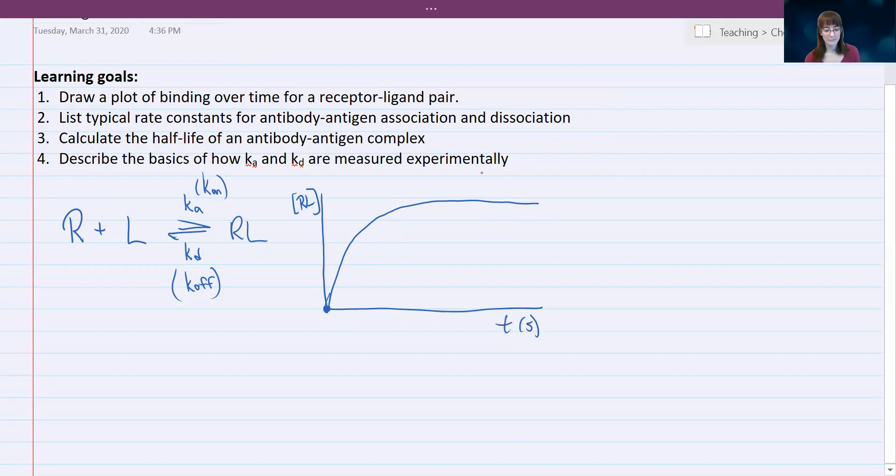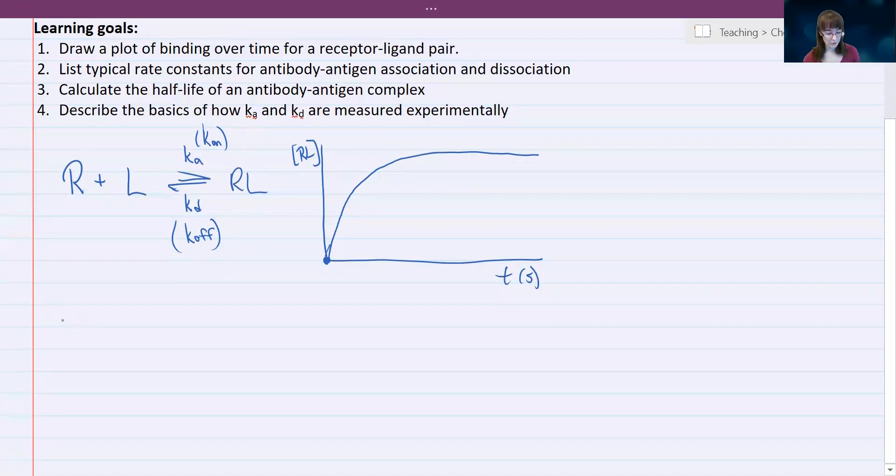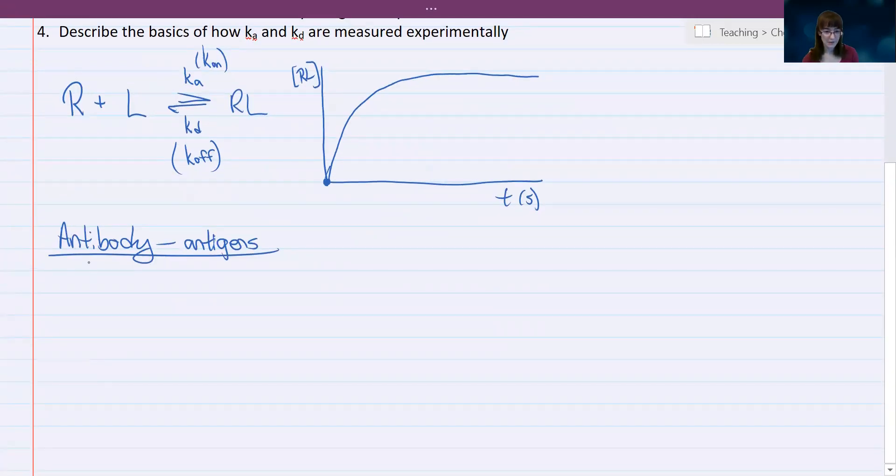And so now there is all the maximum amount of bound complex that we can form. And so there's actually mathematical equations that can describe this process. This is actually fit nicely by an exponential increase curve with saturation, but we're not going to go into that in this lesson. If you're interested, I can point you to some resources. What's worth knowing for us is that for antibody-antigen interactions, there are some typical values of these rate constants and it depends on what the antigen is and its molecular weight basically.